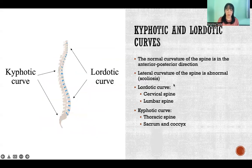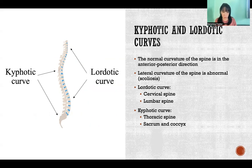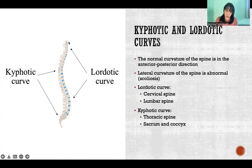So the curvatures: the normal healthy spine has curvature in the anterior-posterior direction — there shouldn't be any lateral curvature. Any lateral curvature of the spine would be scoliosis, and that's considered abnormal. Anterior-posterior curvature is absolutely normal and necessary for a healthy spine. The direction of the curvature is what tells us whether it's a lordotic curve or a kyphotic curve.